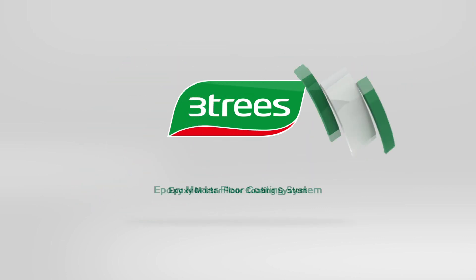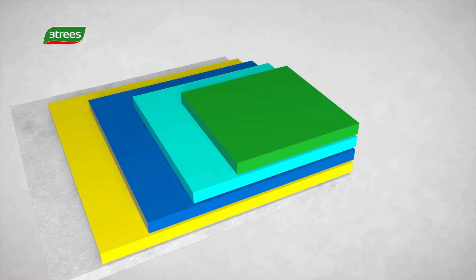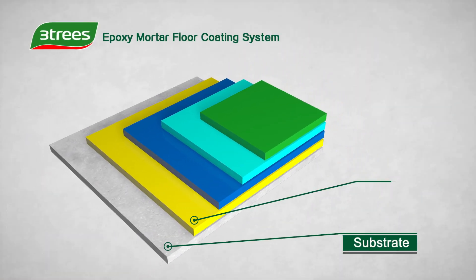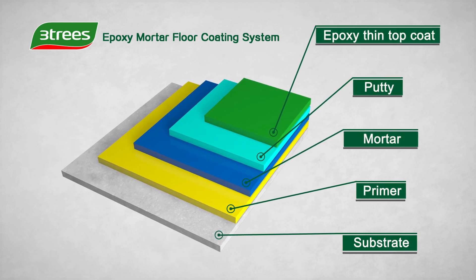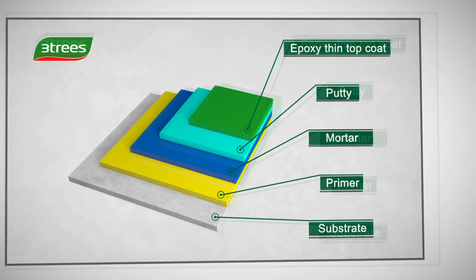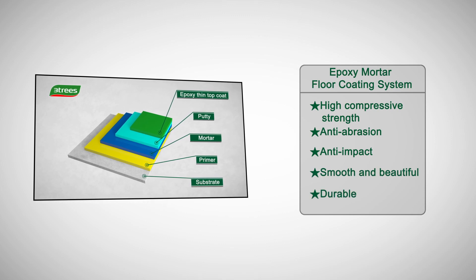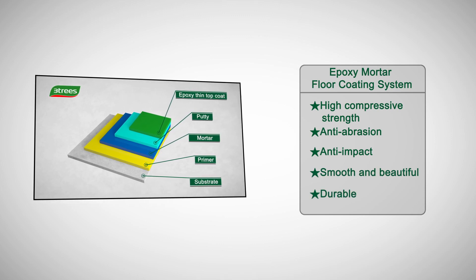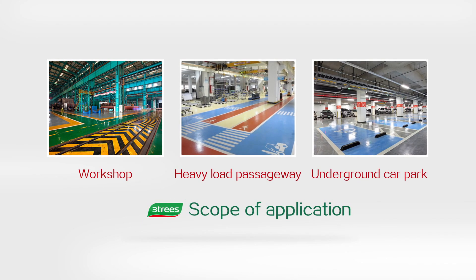Here, we give you a detailed introduction of 3T Spend epoxy mortar floor coating system. This system is composed of primer, mortar, putty and epoxy thin top coat. It has multiple advantages such as high compressive strength, anti-abrasion, anti-impact and durable. Suitable for application areas with high requirements, such as workshop, heavy-duty passageway, underground car park, etc. Following is the application procedure in detail.